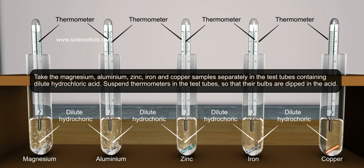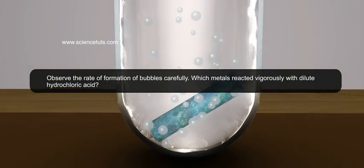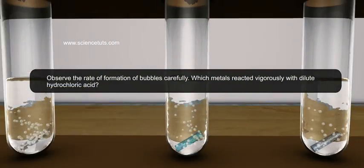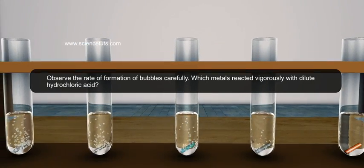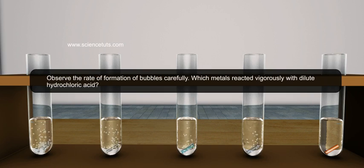Suspend thermometers in the test tubes so that their bulbs are dipped in the acid. Observe the rate of formation of bubbles carefully. Which metals reacted vigorously with dilute hydrochloric acid?